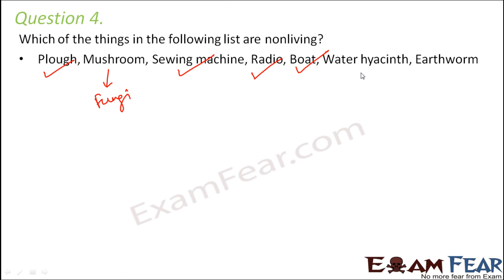Water hyacinth is a plant, so it is living. An earthworm is a worm that lives in the soil — it eats food, excretes waste products from its body, moves, and respires. So it shows many signs of life and is obviously a living organism.